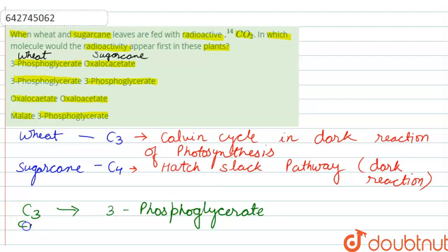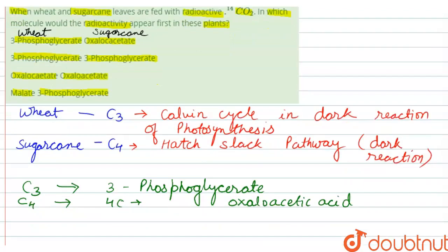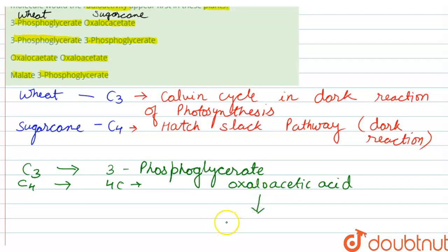Whereas in C4 plants, the first product of photosynthesis is a 4-carbon organic acid known as oxaloacetic acid. Further, this oxaloacetic acid gets reduced to malic acid, or malate or aspartate.